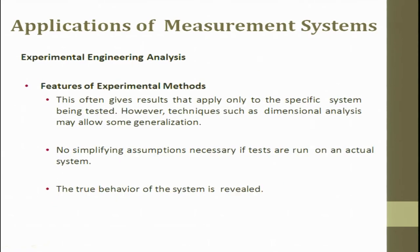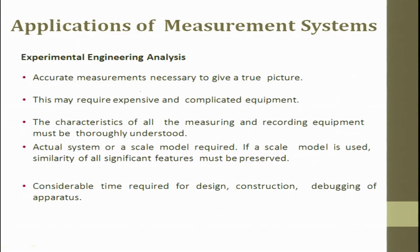When we talk about features of experimental modeling, it often gives results that apply only to a specific system being tested - this is empirical modeling as mentioned in the previous lecture. However, dimensional analysis techniques may allow some generalization. In experiments, the true behavior is realized. Accurate measurement is necessary to give a true picture. Experiments are always expensive and the device required is complicated in nature. Considerable time is required for designing, construction, and debugging the apparatus before doing the final version.